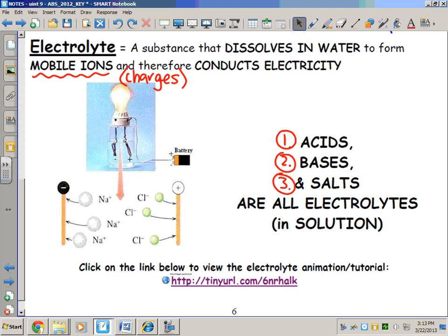When they ionize and have mobile ions in solution or mobile charges, that means they can conduct electricity and the light bulb will go on. I'm going to play this link now. This is a great tutorial that goes with it.